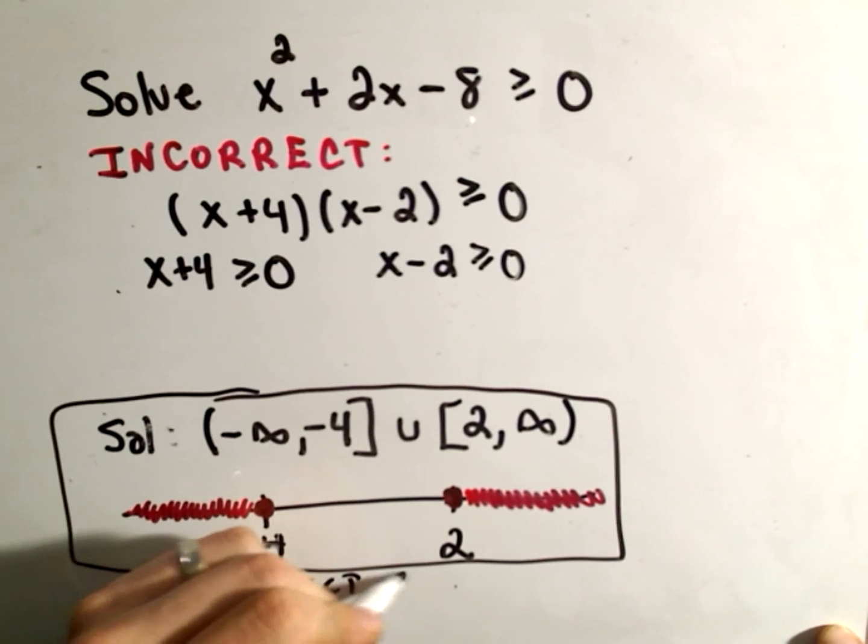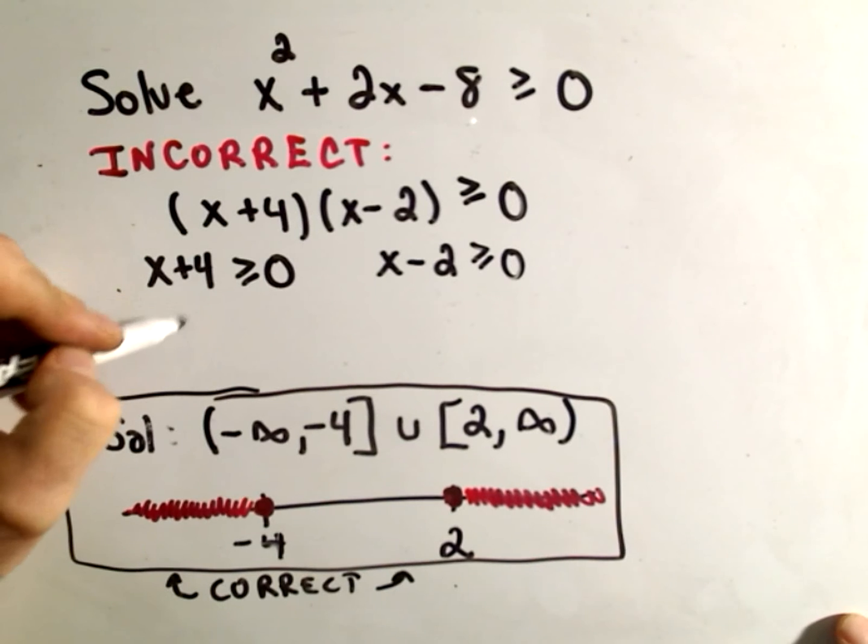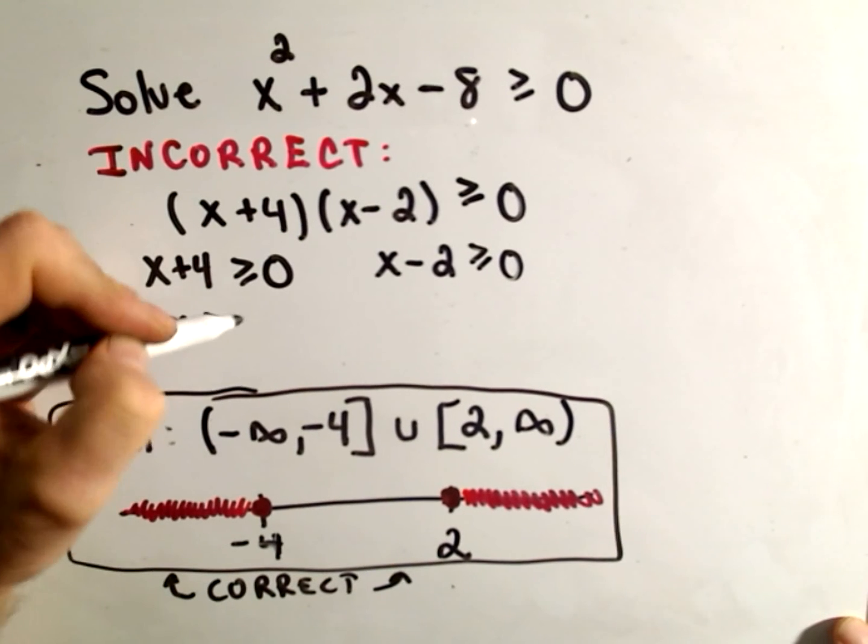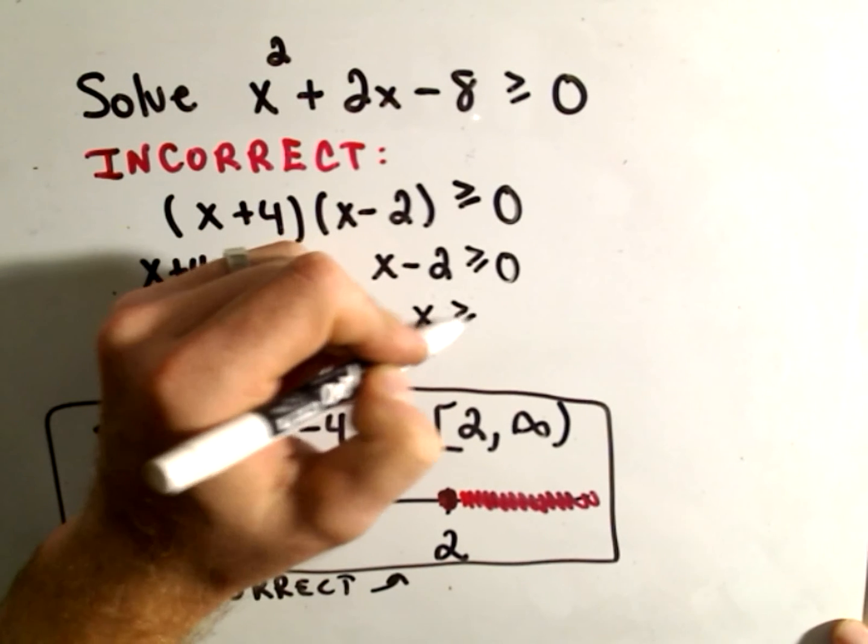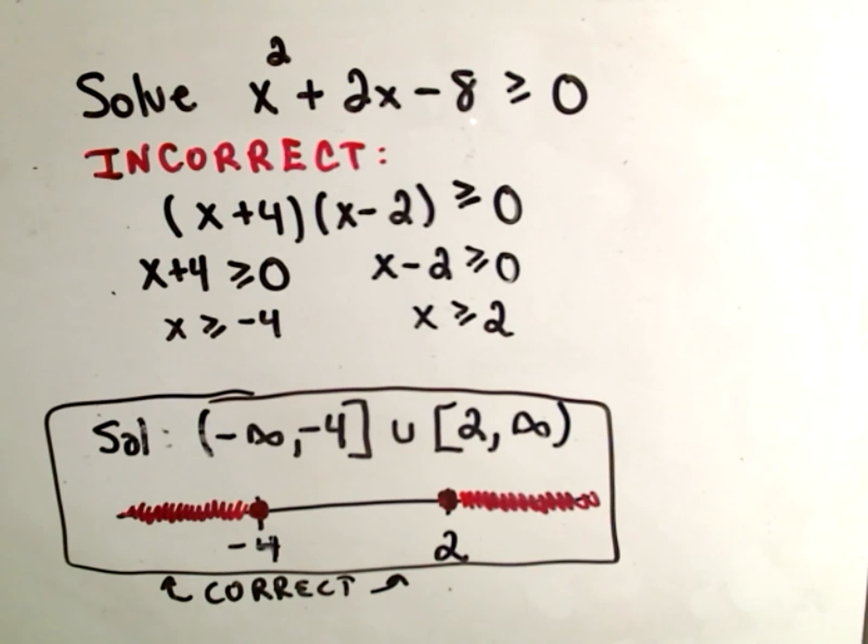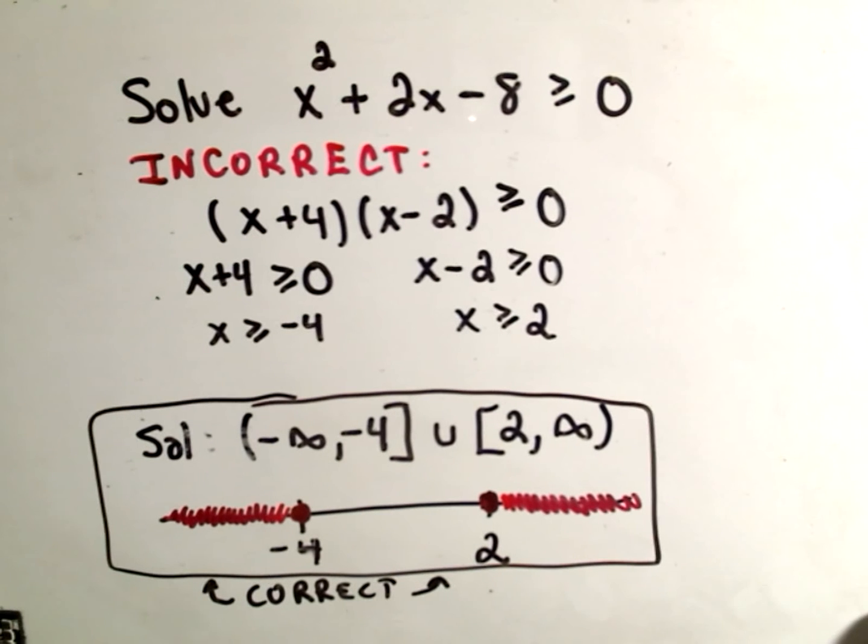Before I lose my focus here. And then they'll subtract 4, and they say, well, x has to be greater than or equal to negative 4. And then if you solve this by adding 2, it says x has to be greater than or equal to 2.